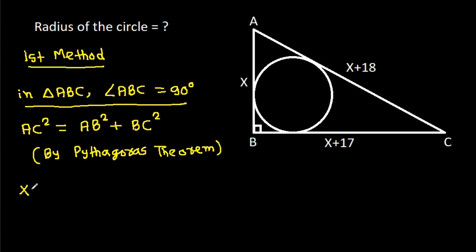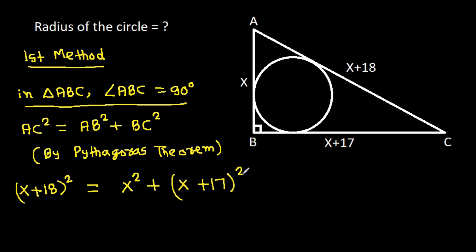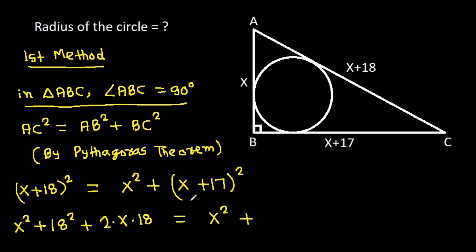AC is x plus 18, so (x+18)² equals AB squared, which is x², plus BC squared, which is (x+17)². Expanding: x² + 18² + 2·x·18 = x² + 17² + 2·x·17.